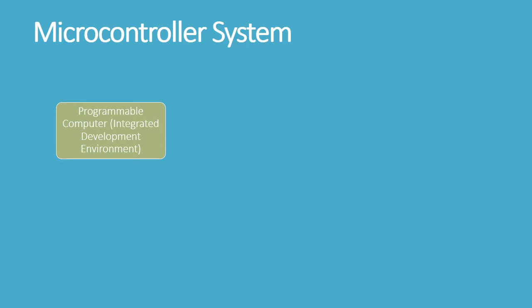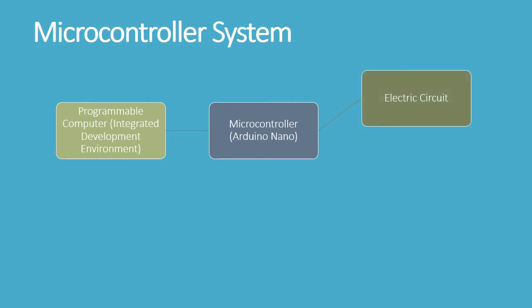The IDE is software for building applications that combines common developer tools into a single graphical user interface. We connect the computer to the Arduino using a Mini-B USB connector. This is both an information connection and a way to power the Arduino. We could also power the Arduino using a 5-volt battery. We often connect the Arduino to an electric circuit via pins — these are ports that allow us to put on input and output devices. These pins correspond to actual physical pins protruding from the Arduino.